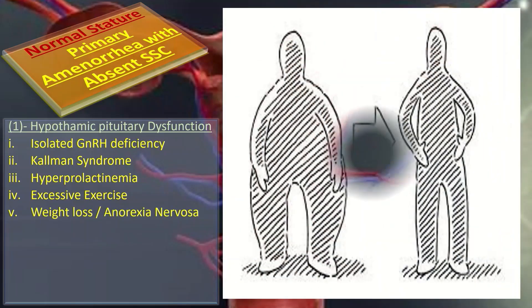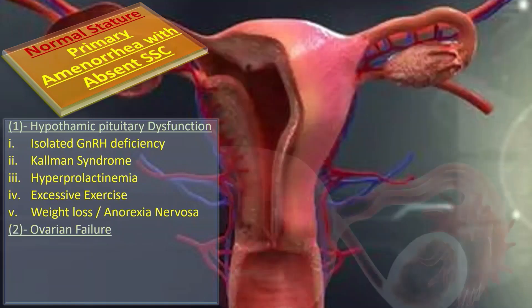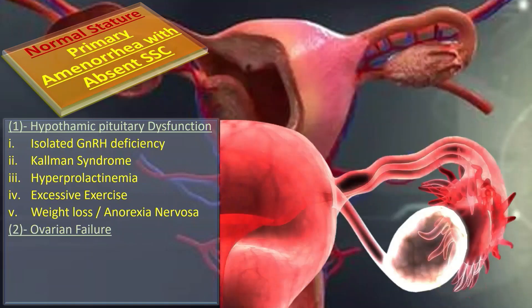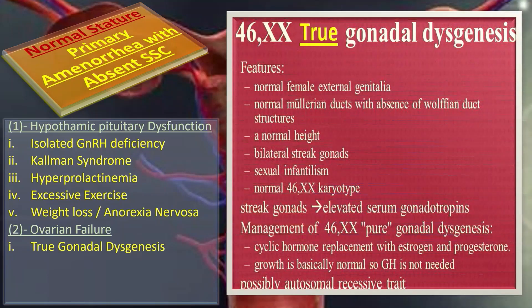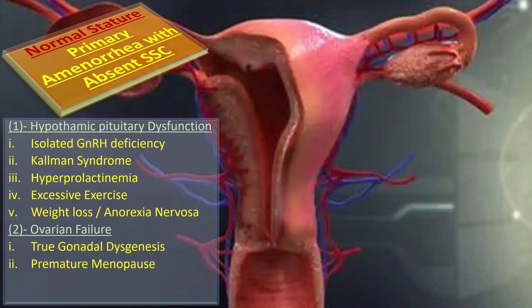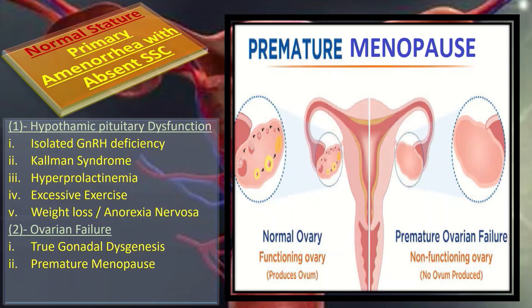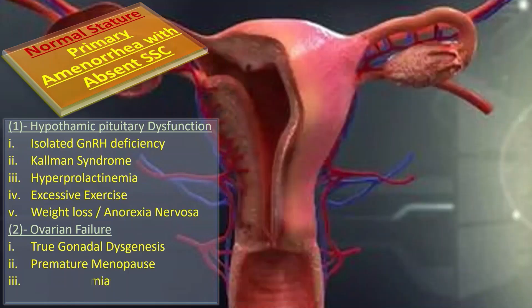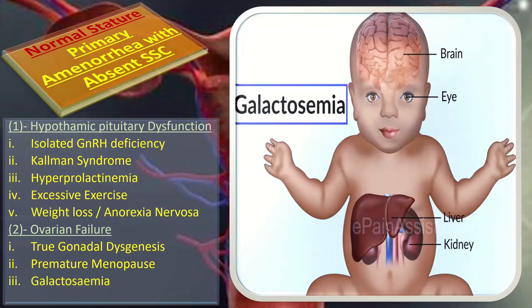Next comes ovarian failure, which is hypergonadotrophic hypogonadism, and that includes true gonadal dysgenesis, premature menopause, and galactosemia. So far we have studied primary amenorrhea with absent secondary sexual characteristics and its two main divisions: short stature and normal stature.